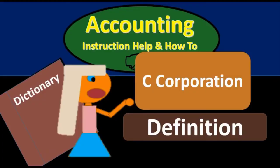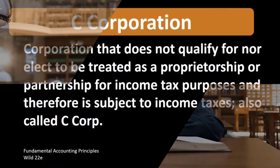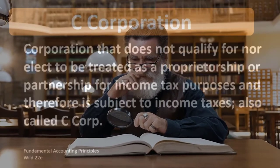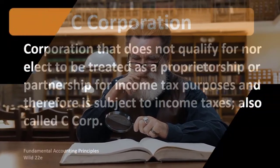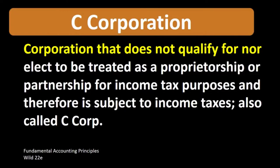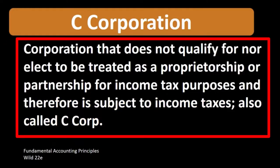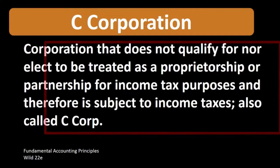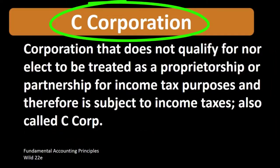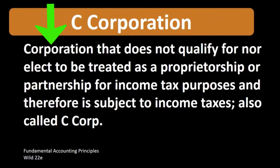In this lecture we will define C corporation according to Fundamental Accounting Principles, 22nd edition. The definition of C corporation is: a corporation that does not qualify nor elect to be treated as a proprietorship or partnership for income tax purposes, and therefore is subject to income taxes — also called C corp. The definition contrasts the normal corporation being a C corporation to other types of entities, which could have corporation elements as well as elements of a pass-through entity.